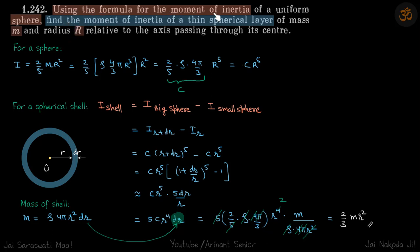Using the formula for the moment of inertia of a sphere, find the moment of inertia of a thin spherical layer of mass m and radius r. We know the moment of inertia of a sphere is 2/5 mr squared.